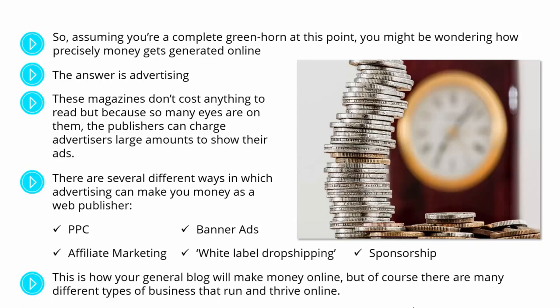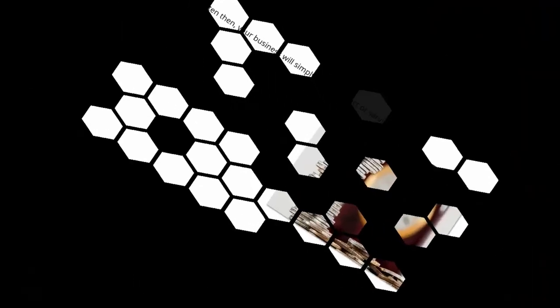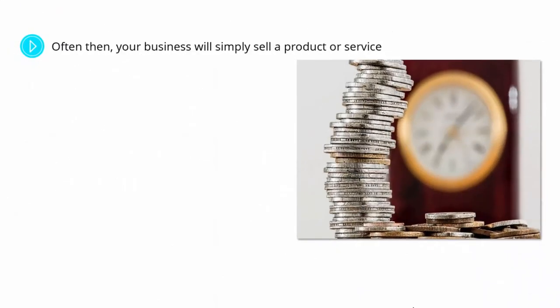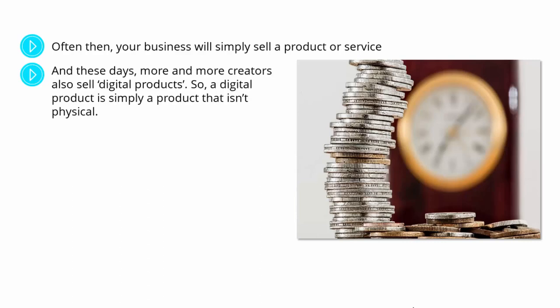This is how your general blog will make money online. But of course, there are many different types of businesses that run and thrive online. These days, you can sell pretty much anything online. Your business might simply sell a product or service. If you are a law firm, you make money through your website every time someone calls up and secures your services. If you have an e-commerce shop selling CDs, you make money each time someone buys a CD. More and more creators also sell digital products — a digital product is simply a product that isn't physical.